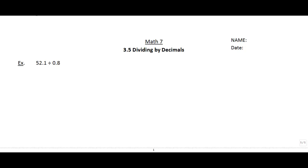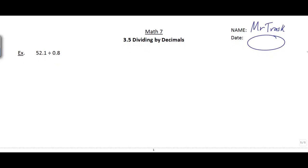Alright class, welcome back. This is lesson 3.5 and today we're going to learn about dividing by decimals. One thing to be aware of is that in grade 7, all we're going to expect you to know how to do is divide by single-digit decimals — things like 0.8, 0.5, or 0.1 and so on.